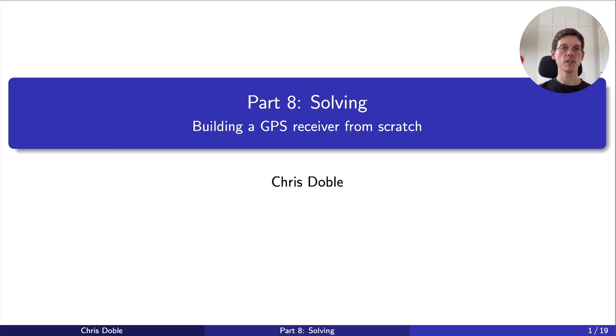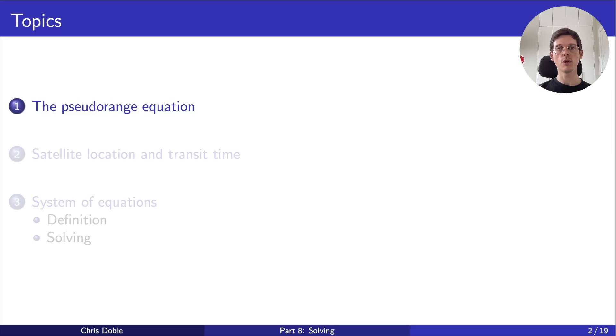In the very first video of this series, I said that if we knew where a satellite was when it transmitted a signal and how long that signal took to reach us, we could draw a sphere around the satellite's position and know we were located somewhere on the surface of that sphere. If we express this mathematically, we get what's called the pseudorange equation. This is the equation we'll eventually solve to determine our location.